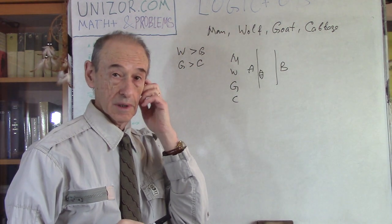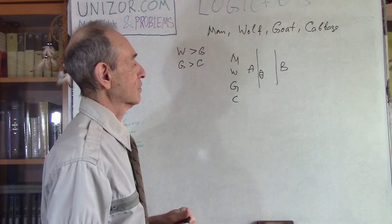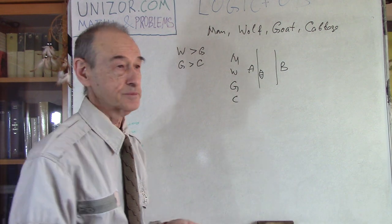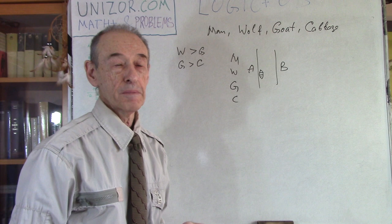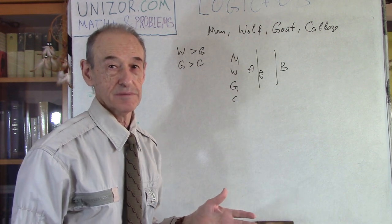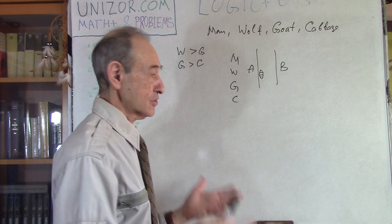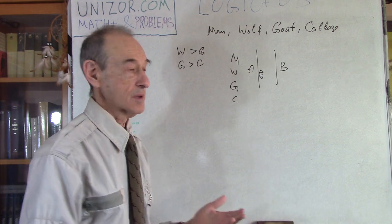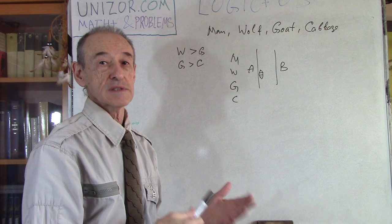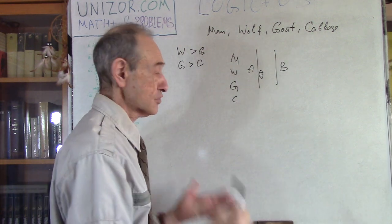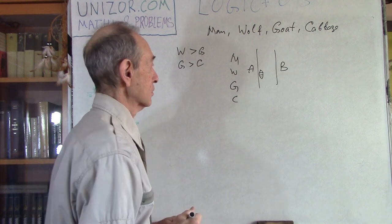The boat can hold only the man who rows and one of the others — either wolf, goat, or cabbage. He has to get everything across so that nobody eats anybody. The question is: what is the sequence of actions? Obviously, if he takes the wolf first, the goat will eat the cabbage while he's away. Some things clearly cannot be done. Pause the video and think. The first move: since wolf doesn't eat cabbage, the man and goat go from A to B.